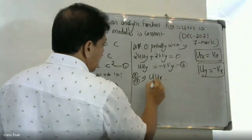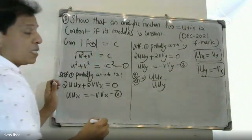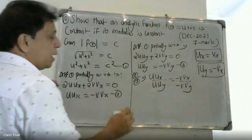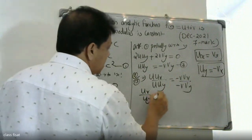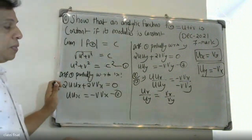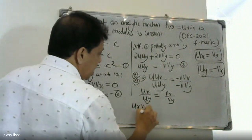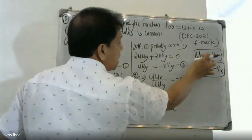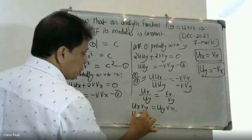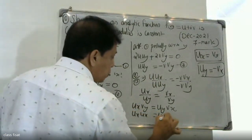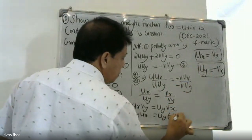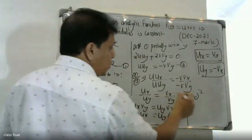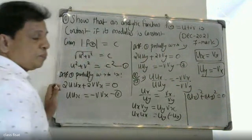Dividing equation 2 by equation 3: (u·ux)/(u·uy) = (-v·vx)/(-v·vy). Applying the Cauchy-Riemann equations — ux = vy and uy = -vx — and cross-multiplying, we get u·uy = 0.